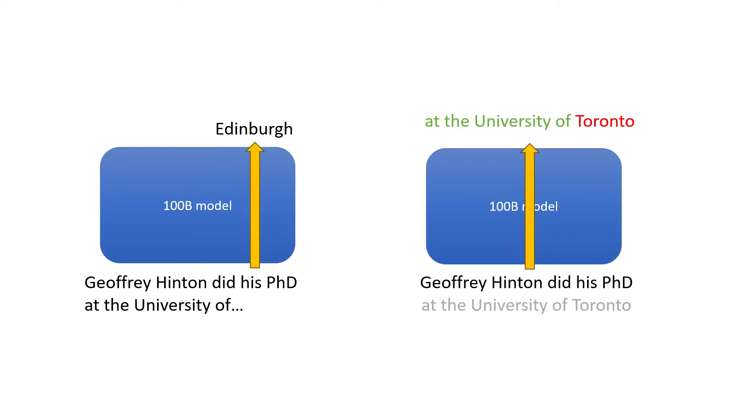And specifically, it generates a probability distribution for each token in sequence. In this case, the probability of the last token will be low because the model would be able to recognize that Geoffrey Hinton did not do his PhD at the University of Toronto.